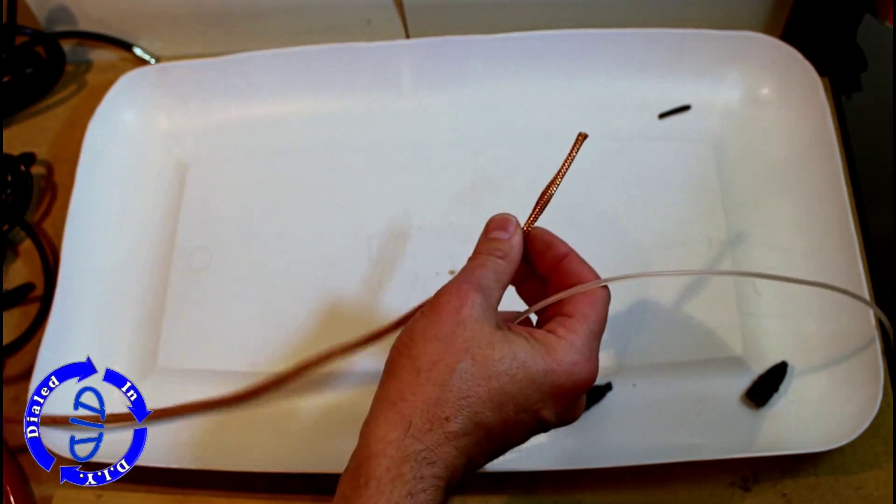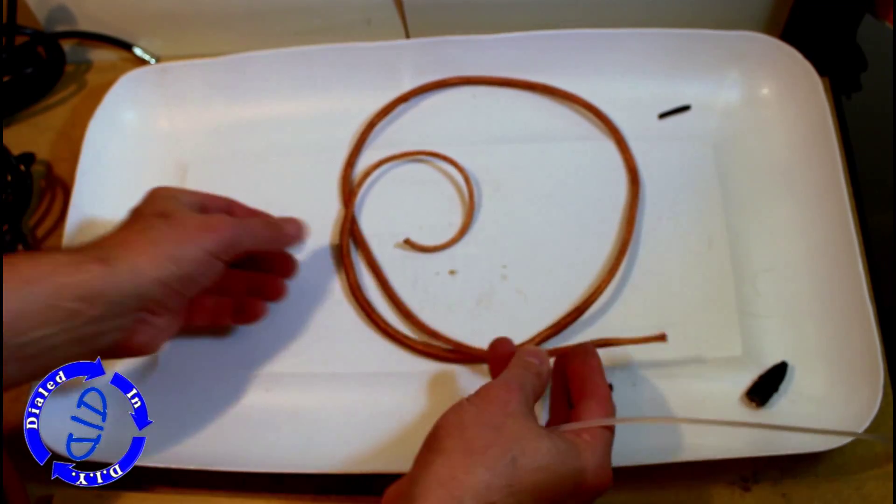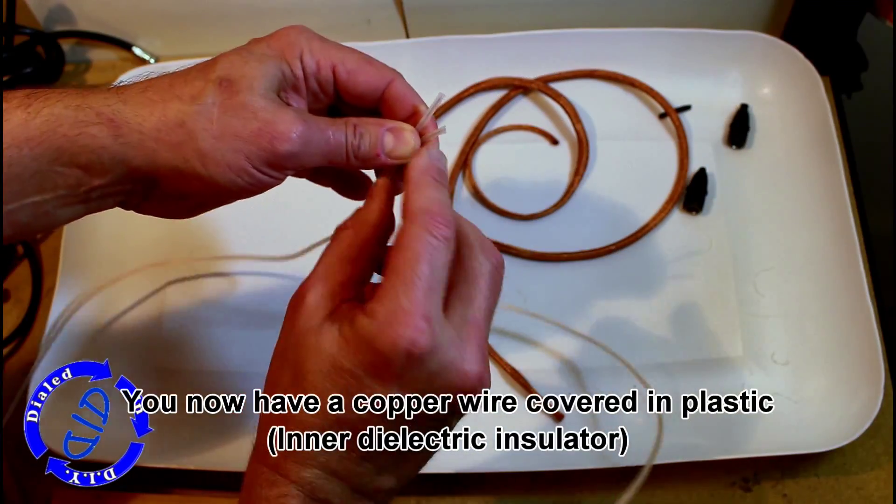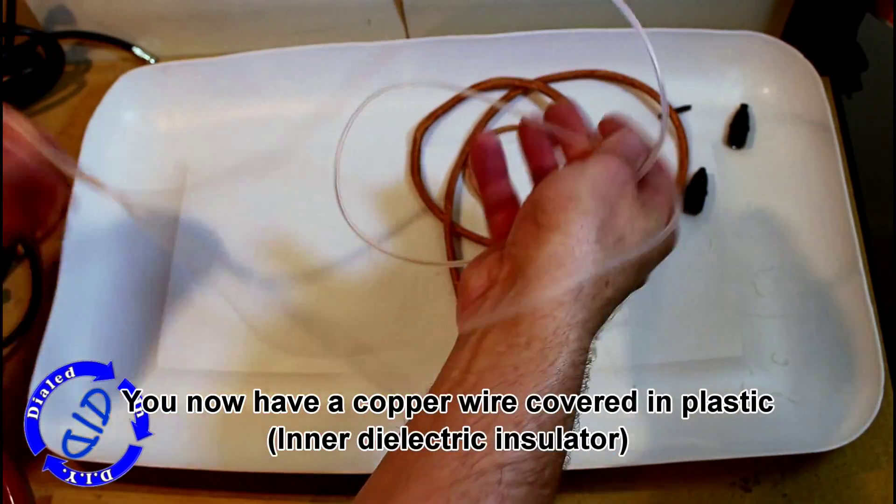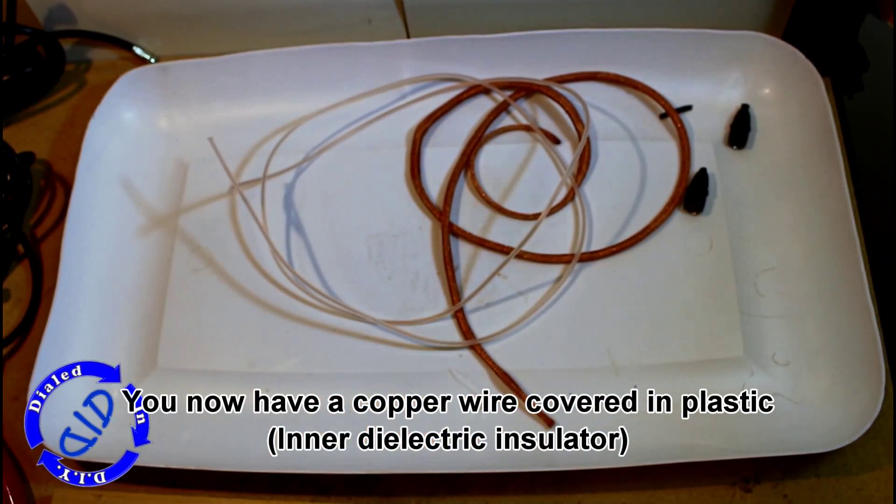What you're left with is actually something really fun. There's a lot of different things you can use it for, but right now you've got a hollow tube that is nothing but a copper mesh. What you're left with here is a great copper wire that's covered in plastic - this is the inner dielectric insulator.